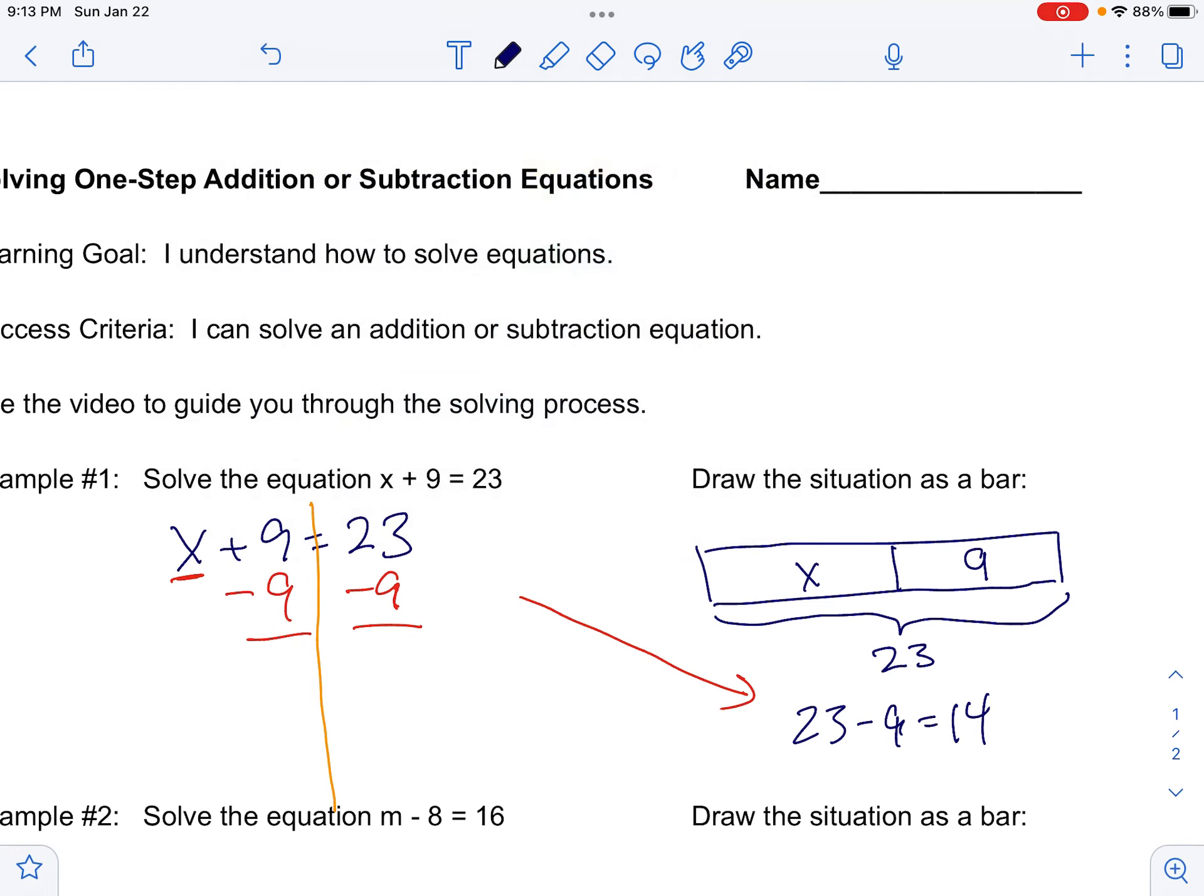After I take 9 away, 9 minus 9 is 0, so this is x plus 0, which is really just x. And 23 minus 9, again, is 14.